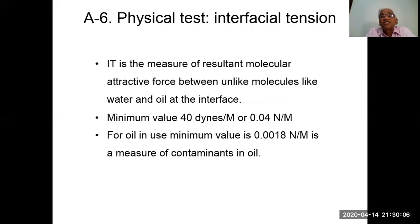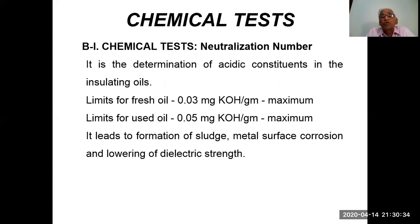Interfacial tension is a measure of the resultant molecular attractive force between unlike molecules, such as water and oil, at the interface. The minimum value is 40 dynes per meter (0.04 N/m) for new oil. For oil in use, the minimum value is 0.0018 N/m. It is a measure of contaminants in the oil.